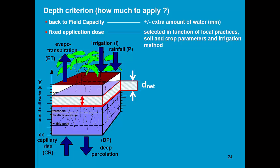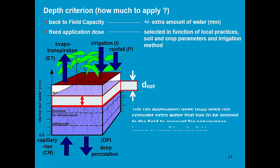When specifying a fixed application dose, only the net depth has to be specified. Don't add extra water that has to be applied to the field to account for conveyance losses or runoff losses from the field.